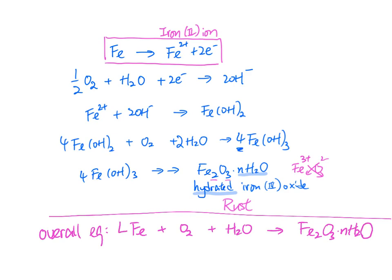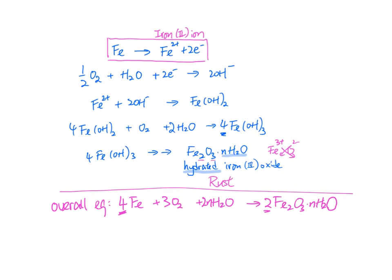For the overall equation, remember the sequence 4, 3, 2, n, and 2 — giving: 4Fe + 3O2 + 2nH2O → 2(Fe2O3·nH2O). The name for this product is hydrated iron(III) oxide, and the color of rust is reddish-brown solid.